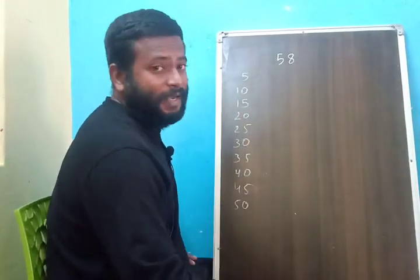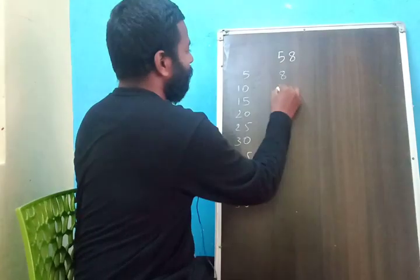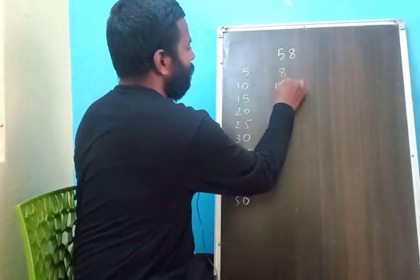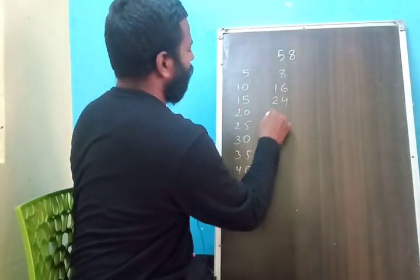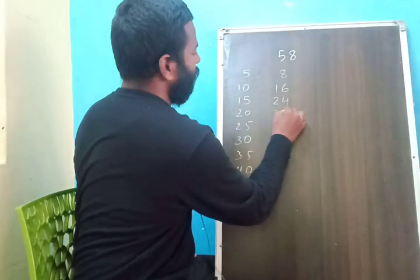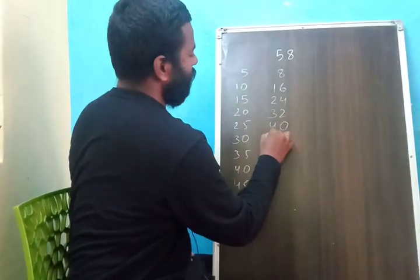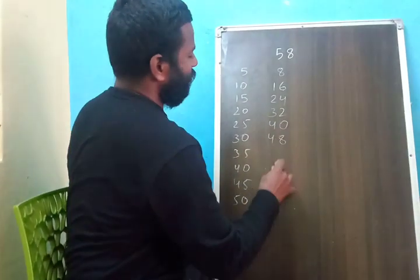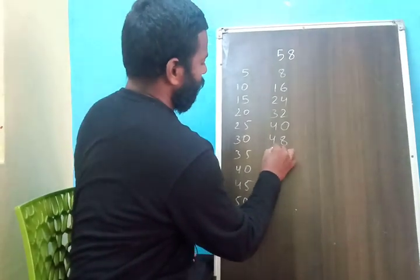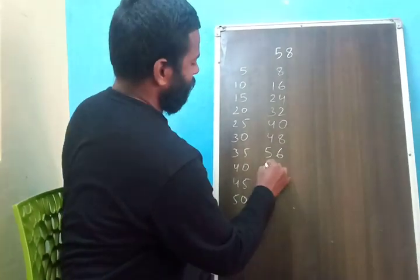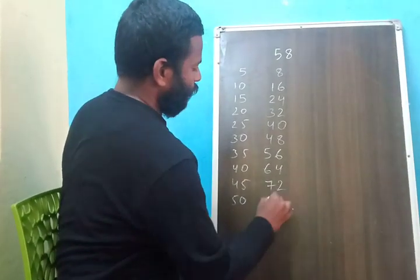In the same manner, I will write the 8th table. 8 ones are 8, 16, 24, 32, 40, 48, 56, 64, 72.